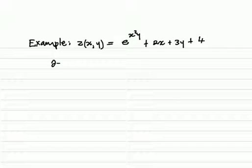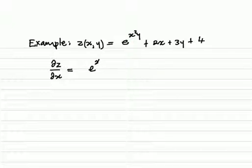In this case, the partial derivative of z with respect to x: this is a function of x, but y is treated as a constant — it's a coefficient of x squared. So the exponential function comes back in the derivative exactly as it is, multiplied by the derivative of the argument. The argument is a function of x; in this case x squared, whose derivative will be 2xy.